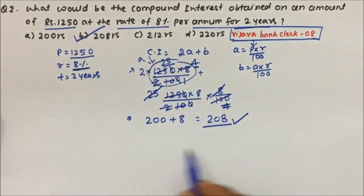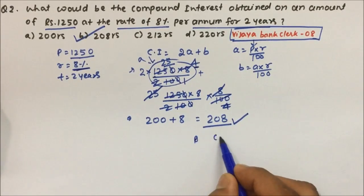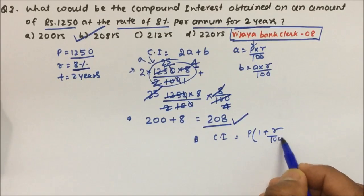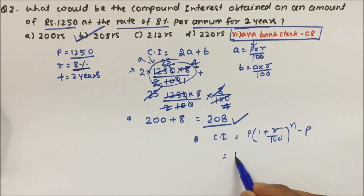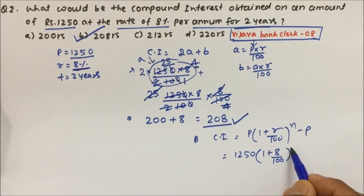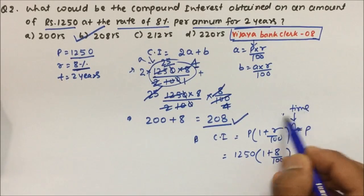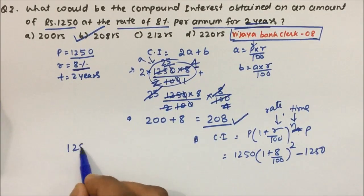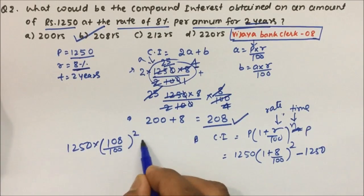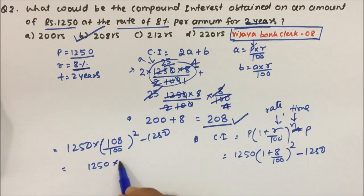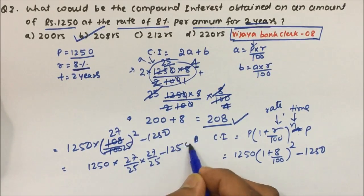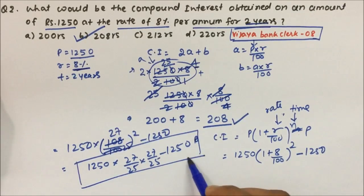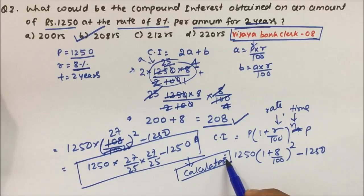So 208 will be compound interest for 2 years, and B will become my answer. If you are trying to use the formula compound interest equals principal into (1 plus R by 100) to the power n minus P, let's see the complexity level. P equals 1250 into (1 plus 8 by 100), n is what time, where n is equals to time, R is equals to nothing but rate, so 2 times, what? 2 years, and minus 1250. Now you see, 1250 into 108 divided by 100 square minus 1250. This will go by 27 times, this will go by 25 times, so 27 by 25 into 27 by 25 minus 1250. So from here you can see the complexity level of the calculation, and if anywhere in mathematics calculation is more, then the problem automatically becomes complicated.